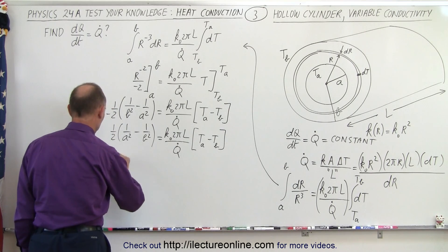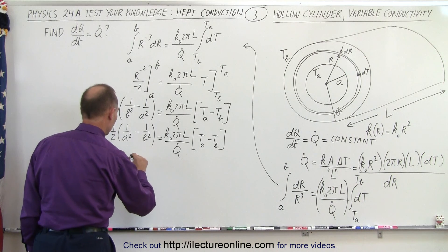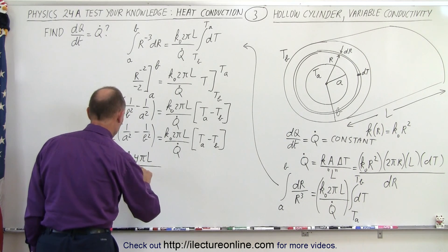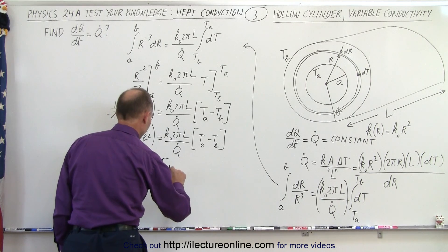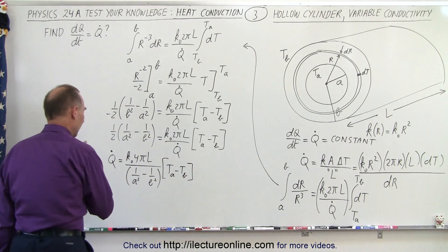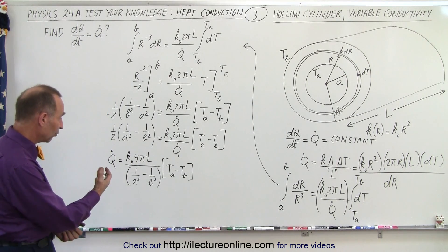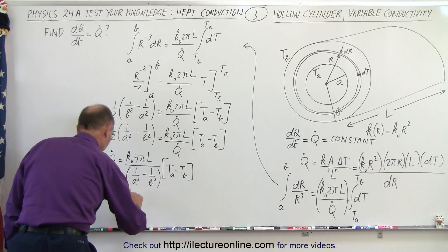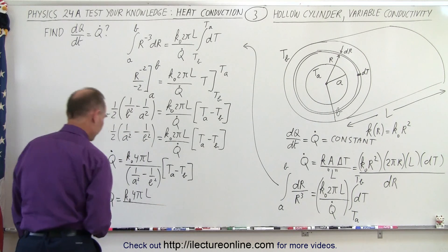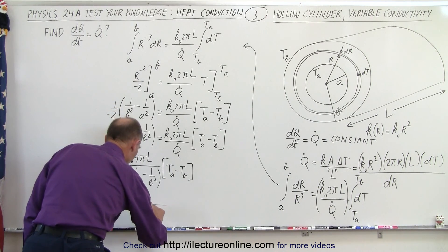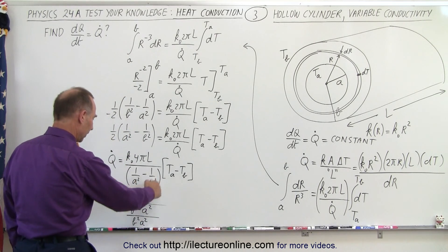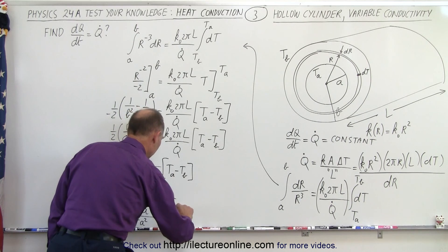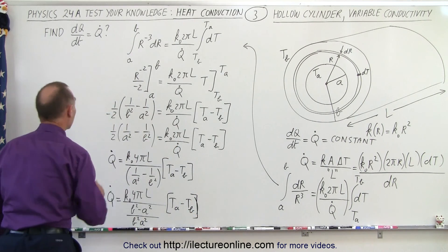Finally, solving for Q-dot: Q-dot is equal to K-naught times 4πL, divided by the quantity (1 over A-squared minus 1 over B-squared), times the difference in temperature (Ta minus Tb). That would be a final answer, although we could also write this over a common denominator.